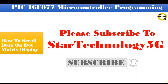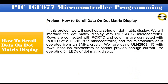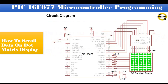Project: how to scroll data string on dot matrix display. In this project we will scroll a data string on a dot matrix display. We will interface the dot matrix display with PIC16F877 microcontroller. Rows are connected with Port C and columns are connected with Port D of the PIC16F877 microcontroller. The microcontroller is operated from an 8 MHz crystal. We are using ULN2803 IC with rows because the microcontroller cannot provide enough current for operating the 64 LEDs of the dot matrix display.